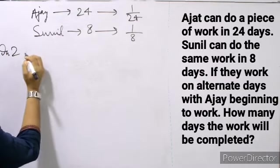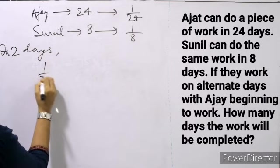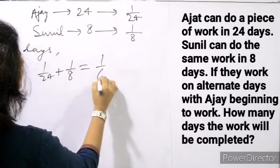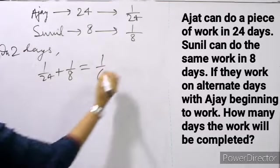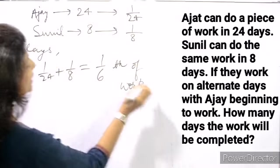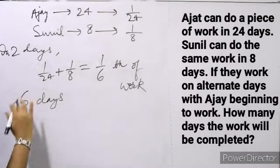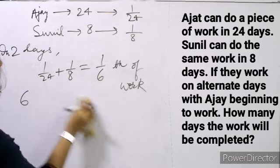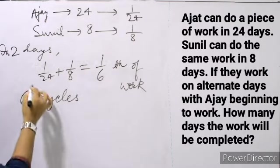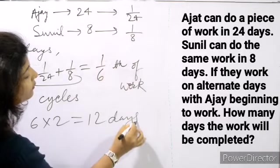They work on alternate days, so in 2 days they do 1 by 24 plus 1 by 8, which equals 1 upon 6th of the work. So they finish 1/6th of the work in every 2-day cycle. 6 cycles are needed, and 6 cycles times 2 days equals 12 days. So they finish the entire work in 12 days.